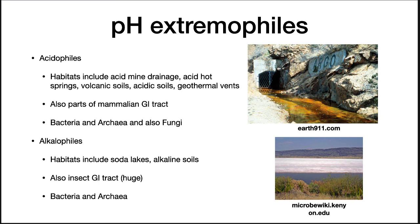Acidophiles' habitats include acid mine drainage, acid hot springs, volcanic soils, acidic soils, and geothermal vents. Also, the parts of the mammalian GI tract, especially near the stomachs of mammals, tend to be quite acidic. Bacteria, archaea, and also some fungi and protozoa are found in these environments. The habitats of alkalophiles include soda lakes and alkaline soils, as well as the GI tract of insects. You find bacteria and archaea at high pHs.